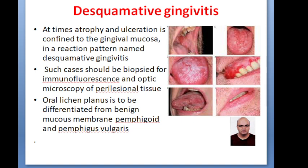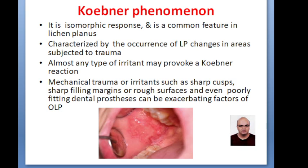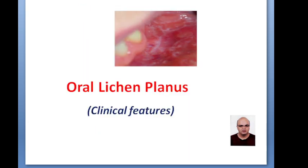There is another term called desquamative gingivitis, which indicates atrophy and ulceration confined to the gingival mucosa. Such cases should be biopsied for immunofluorescence, and oral Lichen Planus should be differentiated from benign mucous membrane pemphigoid and pemphigus vulgaris in such cases. Koebner's phenomenon is characterized by the occurrence of Lichen Planus changes in areas subjected to trauma. Almost any type of irritant may provoke Koebner's phenomenon — mechanical trauma, sharp margins, or poorly fitting dental prostheses can be exacerbating factors in oral Lichen Planus.